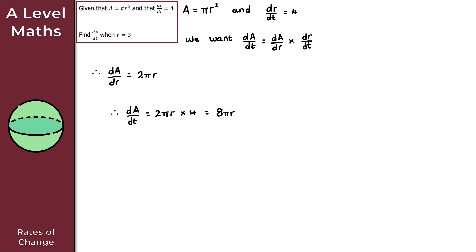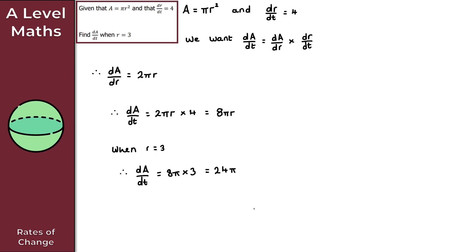Now we're looking to find dA/dt when r = 3. Substituting r = 3 into dA/dt = 8πr gives us 8π × 3 = 24π. And there we have it — that gives us the solution to question 1. Nice and straightforward.